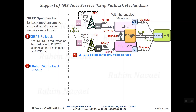The second mechanism is RAT fallback. In this case, the 5G voice over NR capable device is released and redirected or handed over to E-UTRAN connected to the 5G core — but not connected to the 4G core — to make an IMS voice call.